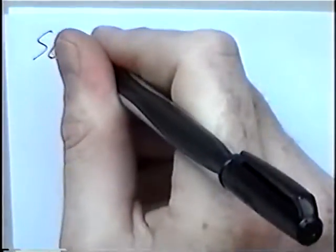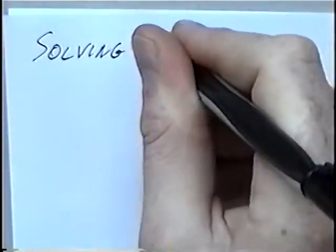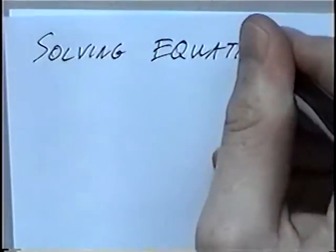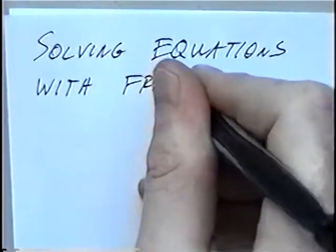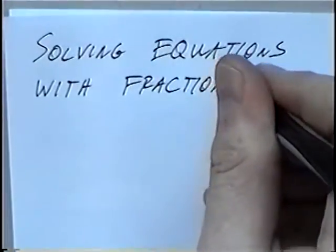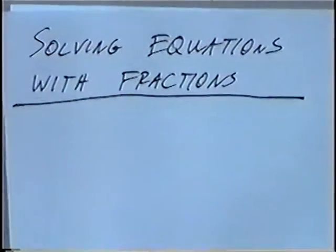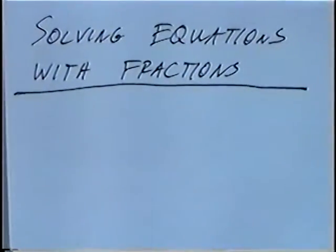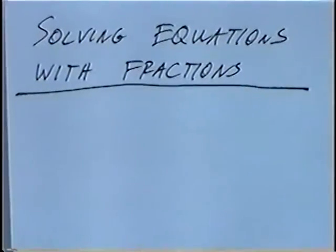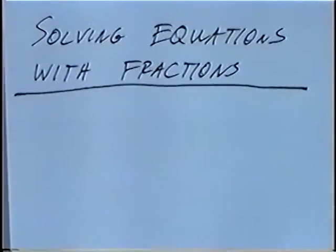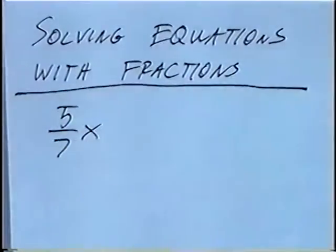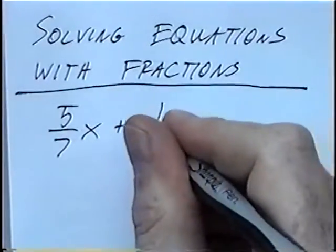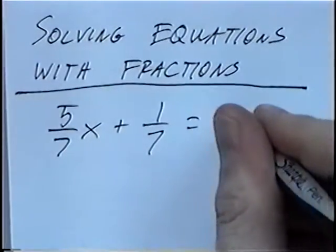The title of the first section today is Solving Equations with Fractions. In this section we'll solve equations, but the equations will contain fractions that we'll have to solve for. The first equation is 5 over 7x plus 1 over 7 equals 3.